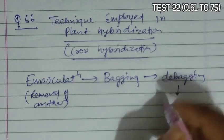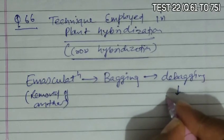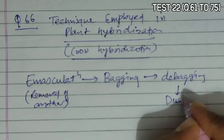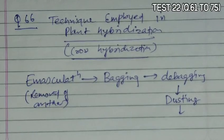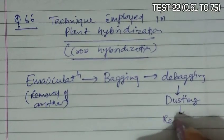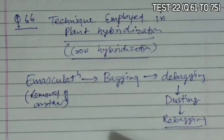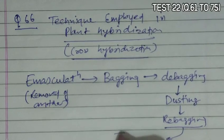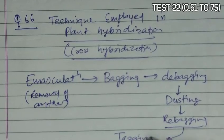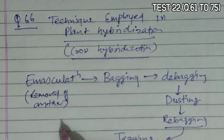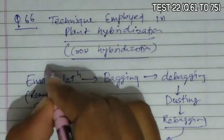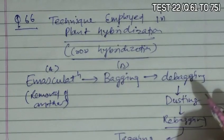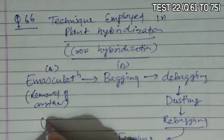When the carpel gets mature, the bag is removed — this is debagging. After debagging, pollen grains of the desired plant are dusted on the stigma of the carpel — this is dusting. After dusting, rebagging is done to allow fertilization. When rebagging occurs and cross fertilization has happened, tagging is carried out to mark that cross fertilization has occurred. Emasculation is option A, bagging is option B, crossing is option C — all are correct, so D is the correct answer.